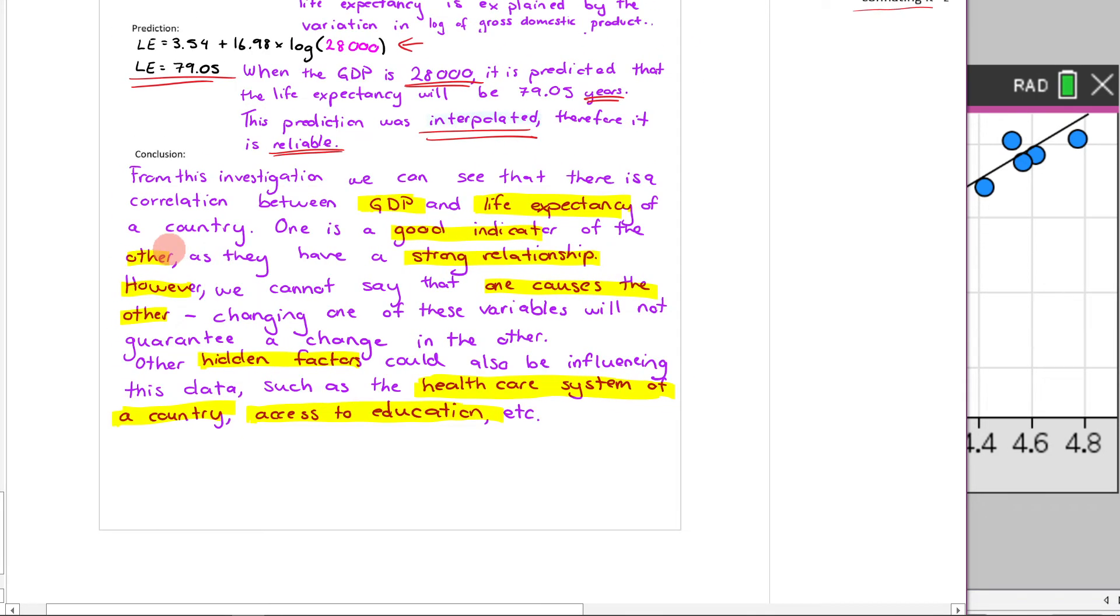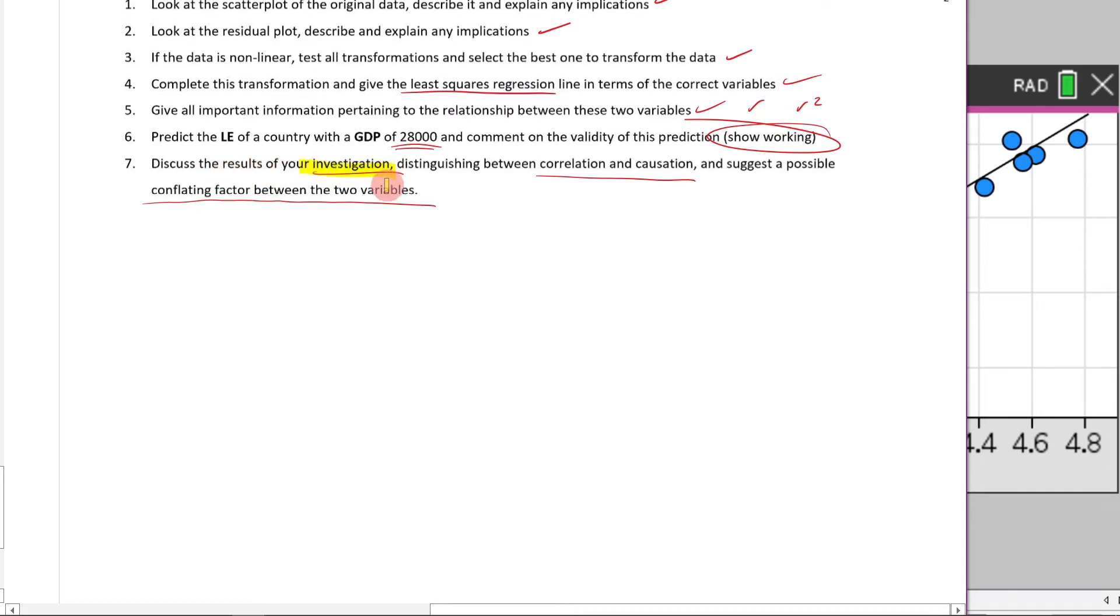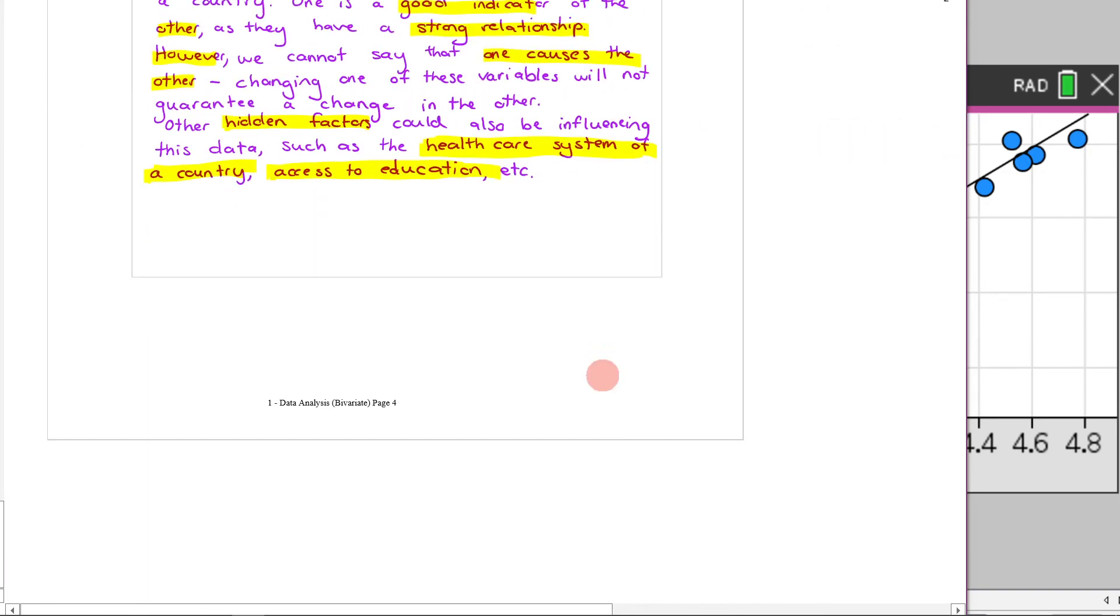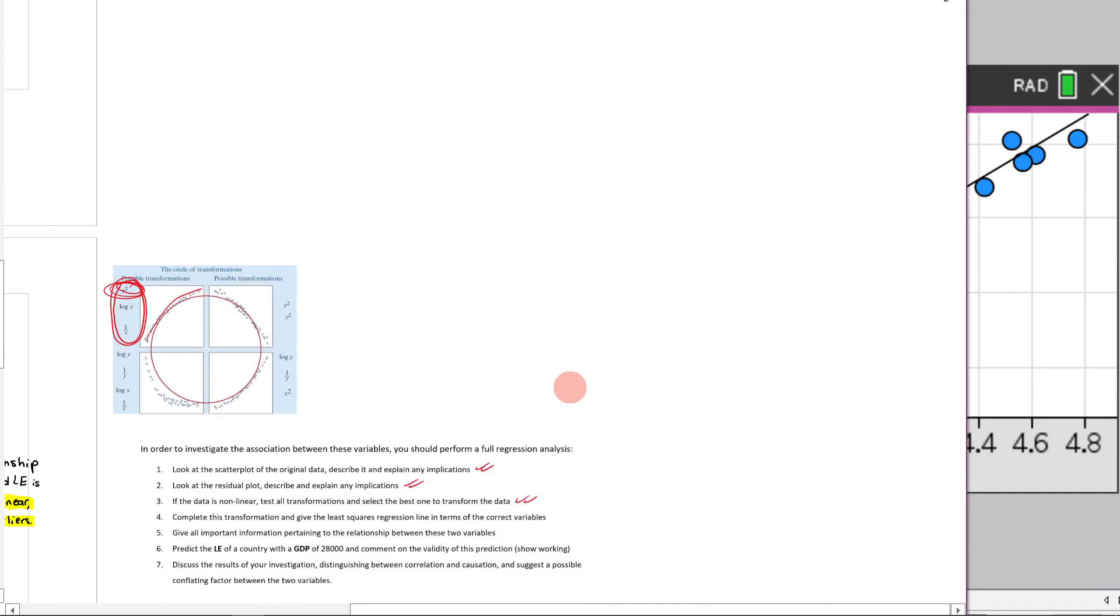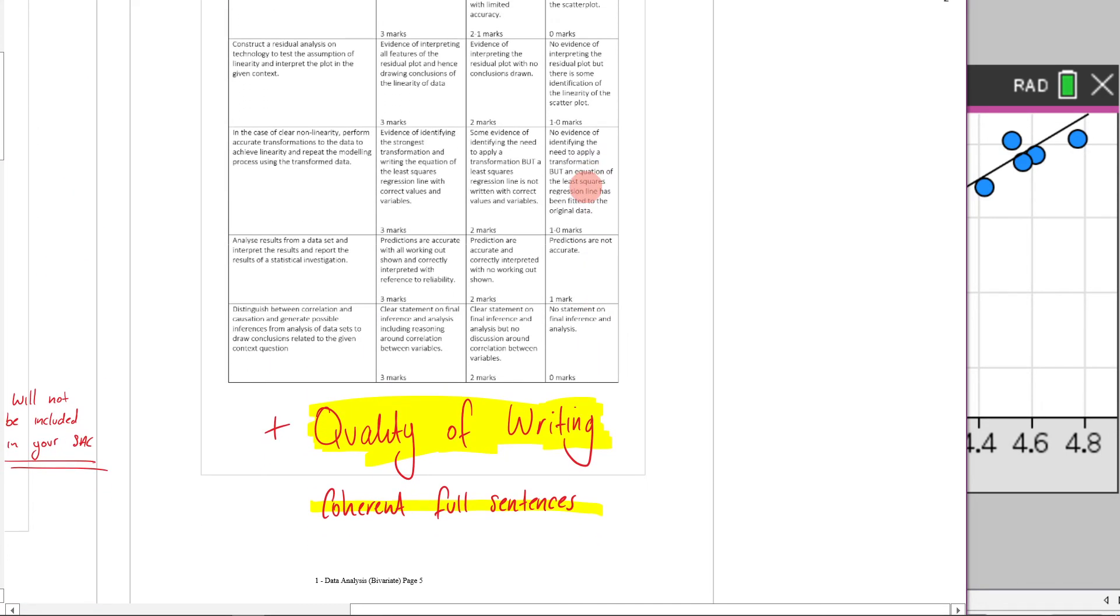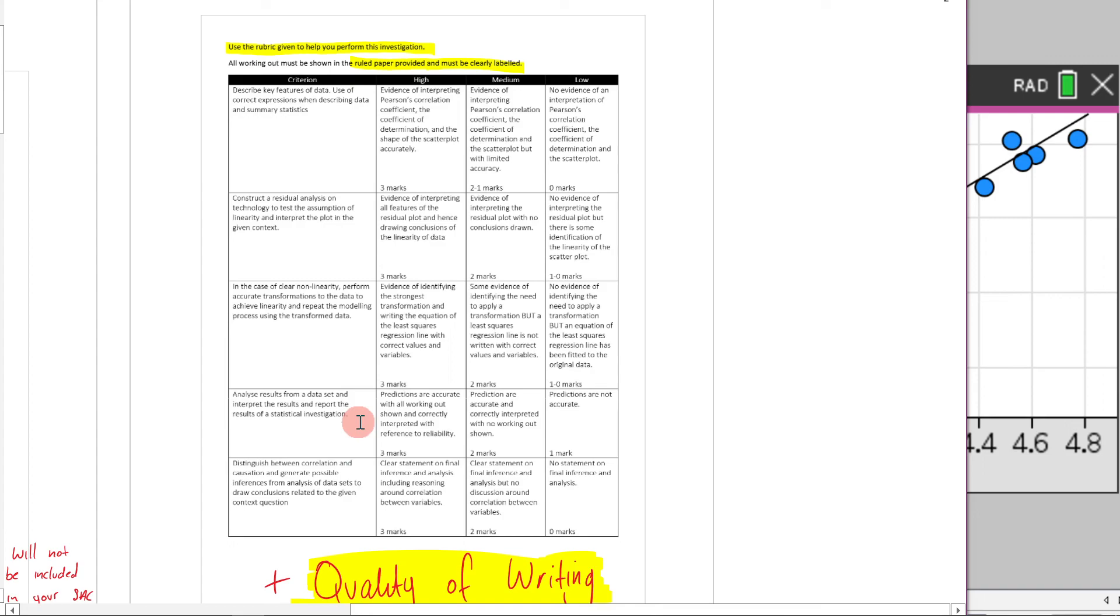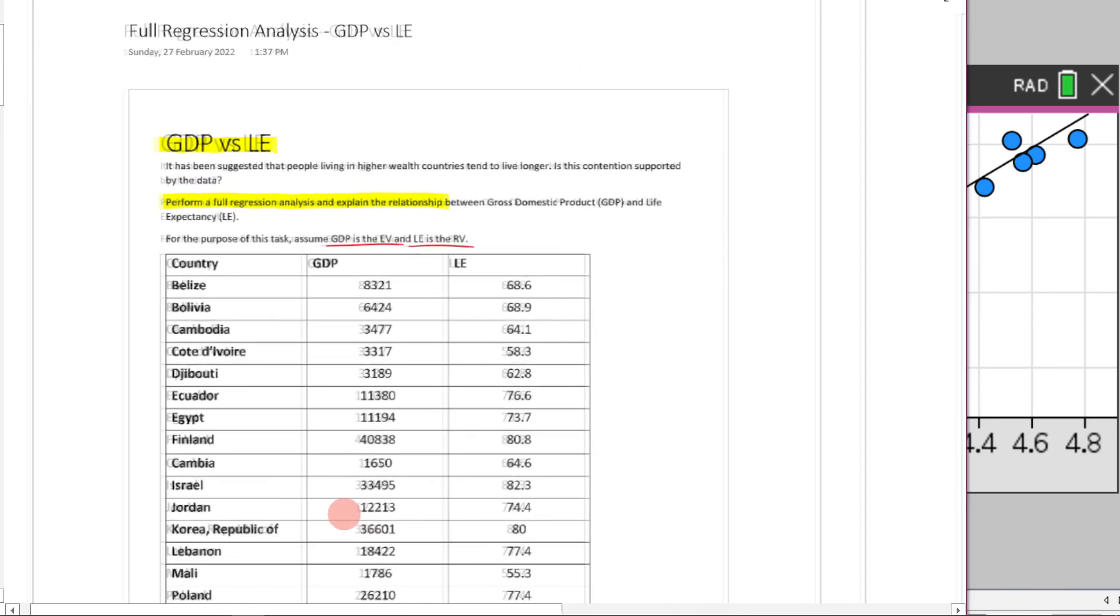And then we're all done. So if we go back here and read this, we have discussed the results of our investigation, distinguishing between correlation and causation, and suggesting some possible conflating factors between the two variables. Okay everyone, that is it. We have done it. Make sure, of course, at the very end, you go back and you read through your rubric, making sure that you've touched upon everything. Make sure you also realize that in your actual SAC, we're going to be judging you based on the quality of your writing, meaning are you writing in coherent sentences? Okay everyone, hopefully this has made sense to you. Make sure that you're reaching out if you're at all confused about anything I have said or want some further clarification as to what your actual open-ended SAC will look like. Thank you very much. I'll see you later.